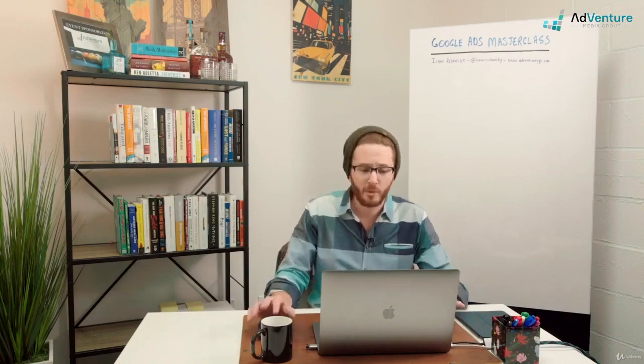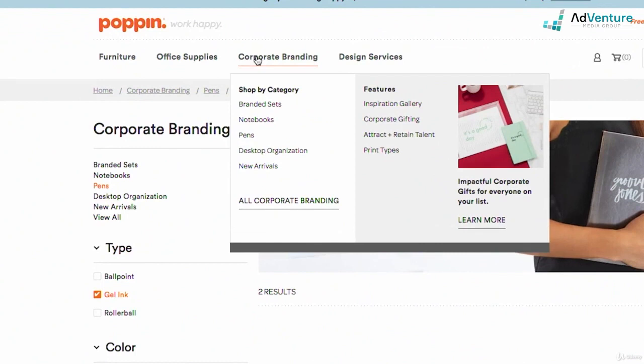What I'm saying is that I think the campaign structure here would be appropriate to have corporate branding at the top as a campaign and then just pens as an ad group, and users can then find whether they want gel ink, ballpoint, or rollerball pens.